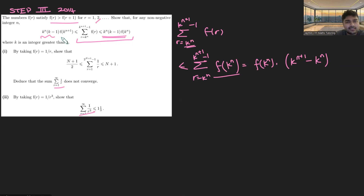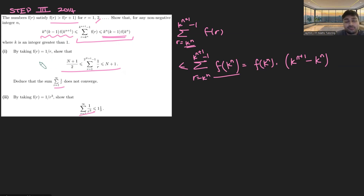You can do something very similar to get the lower bound. For part two, we take f(r) = 1/r and show that the given sum is true. As with most STEP problems, we want to use the first part. We check: is f(r) = 1/r a decreasing function? Thankfully, yes — 1/r is decreasing, so we can use the result from part A.